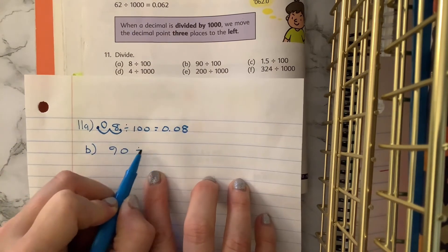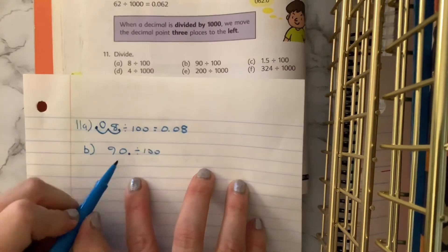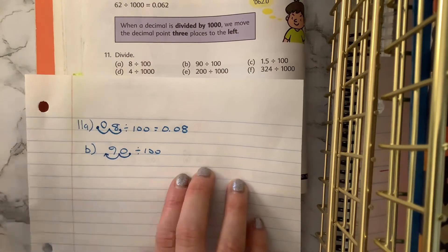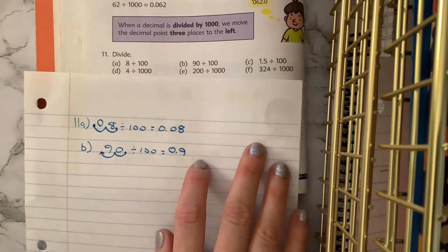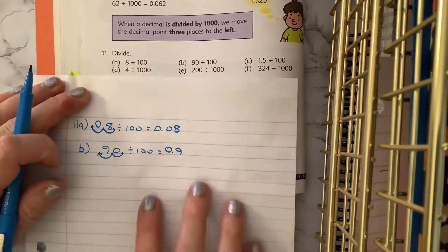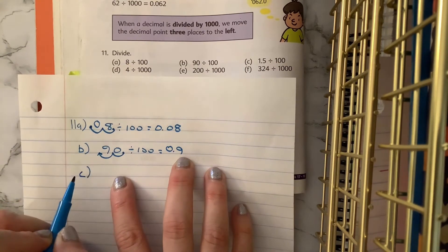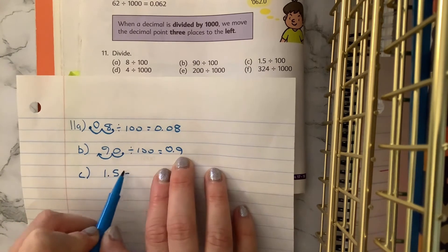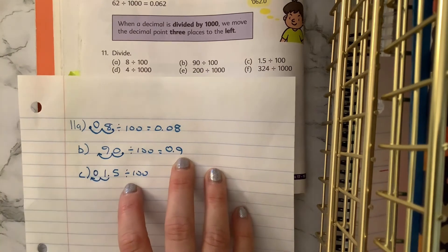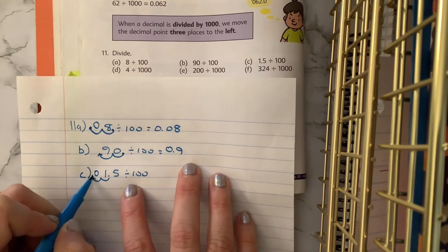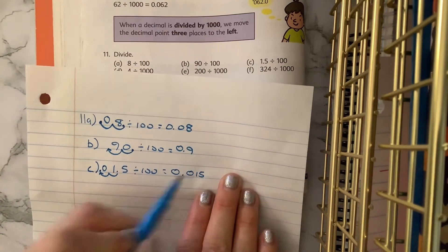B: 90 divided by 100. Again, imagine that decimal point is there. We're dividing by 100, so we go 1, 2 to the left, which gets us 9 tenths. If you have not paused yet to try any on your own, definitely try C now and come on back. With C, fifth graders, there is a decimal point, so we can just move 1, 2 to the left — and we end up with 15 thousandths.